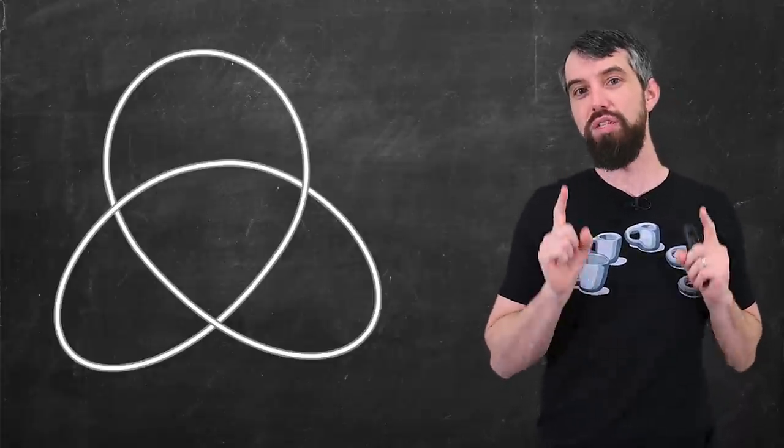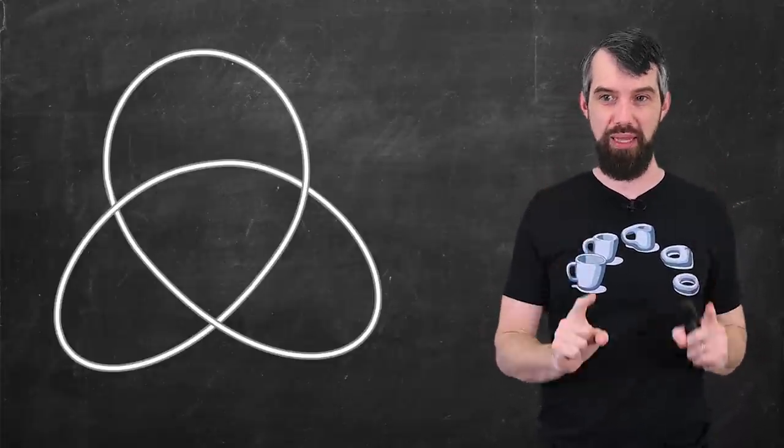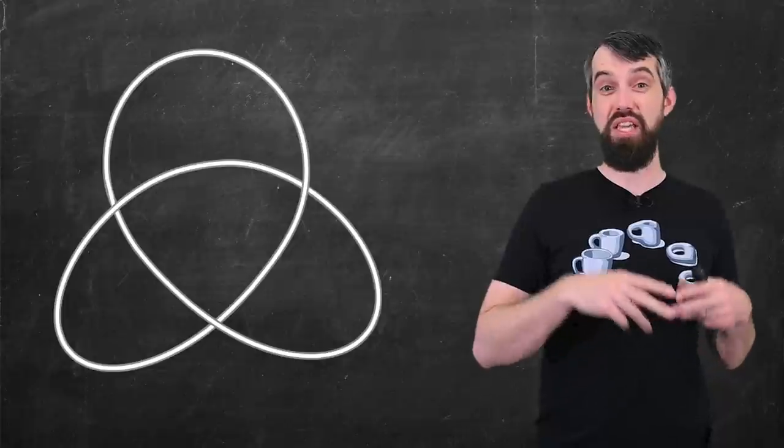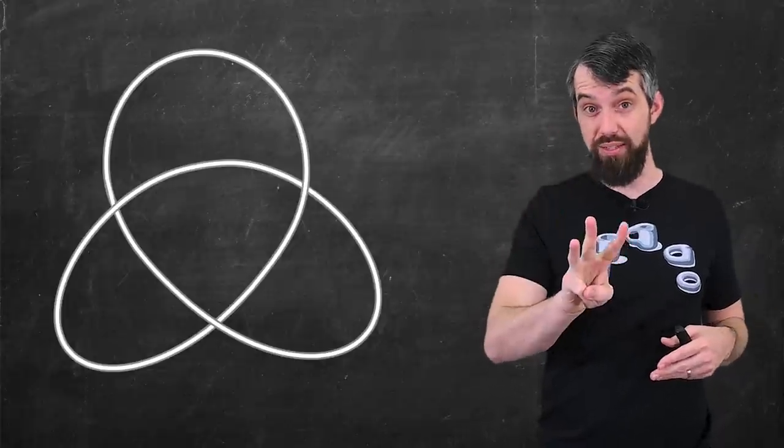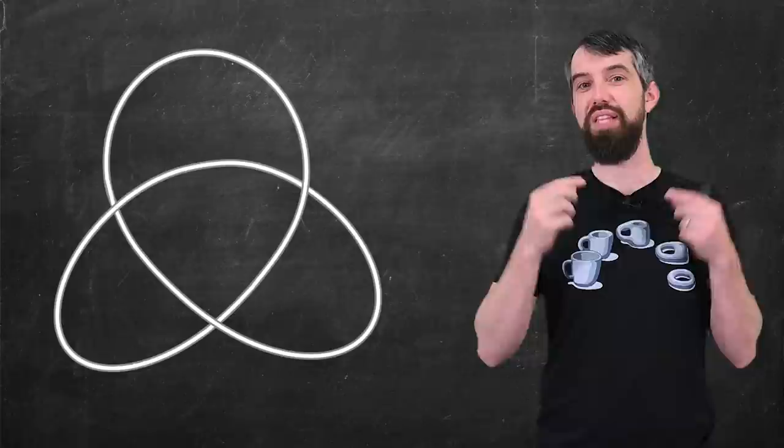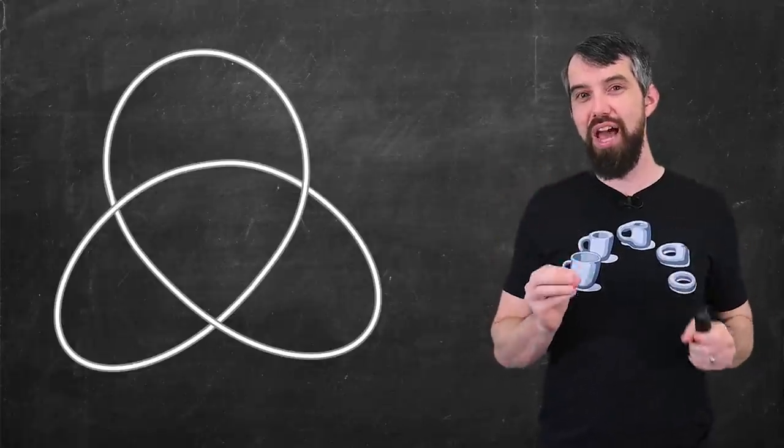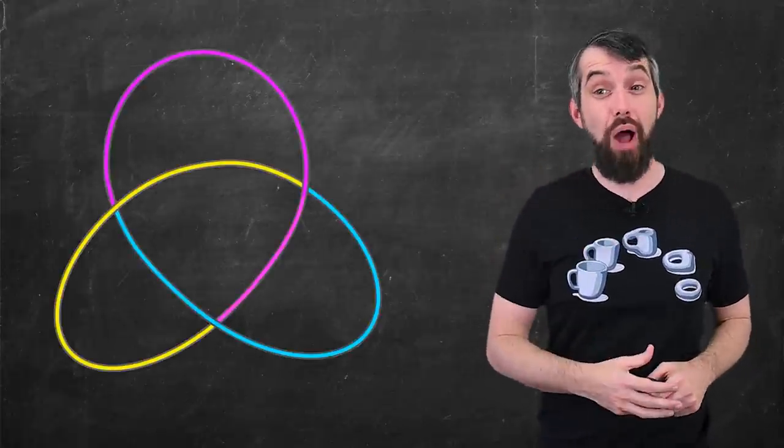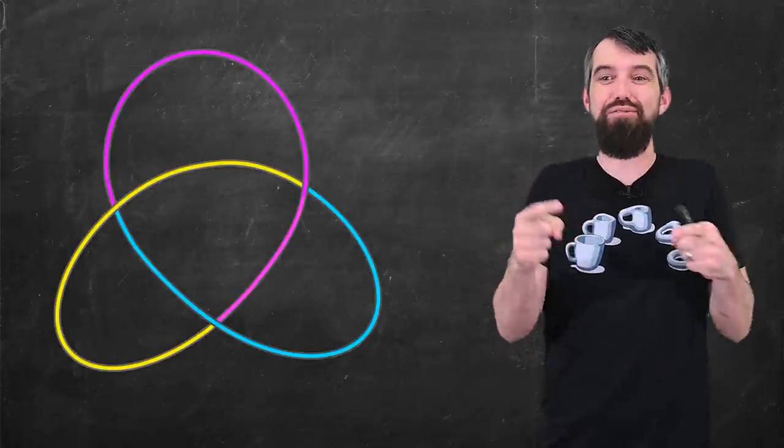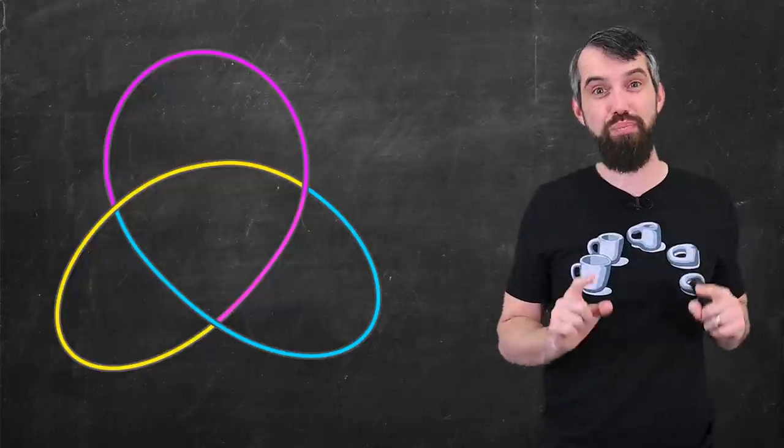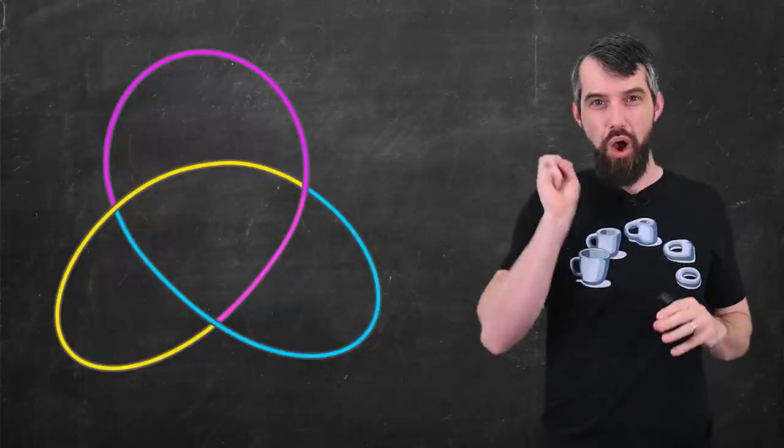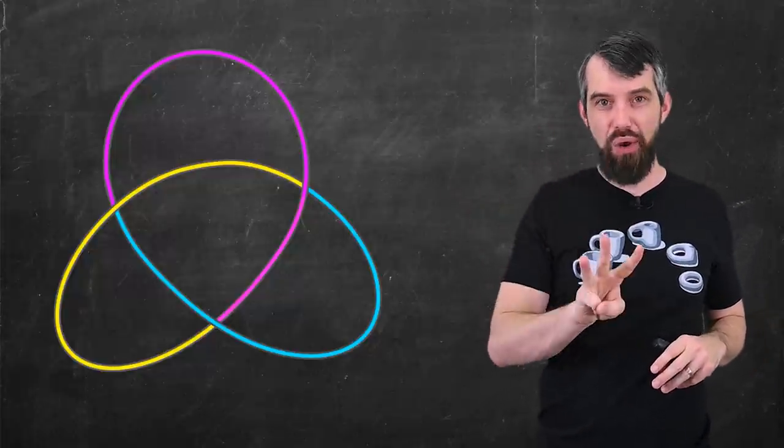I'll show you the first one. The first one is called tricolorability. Here again is the trefoil knot. This is the only knot with three crossings up to our ability to do Reidemeister moves and so forth. And this is a kind of fancy feature. I can tricolor it. I can put three different colors on it, and this has the property that at every one of these crossings, all three of the colors are present.